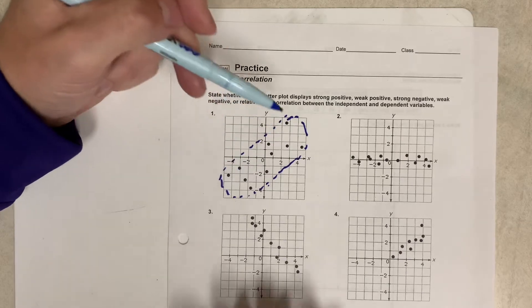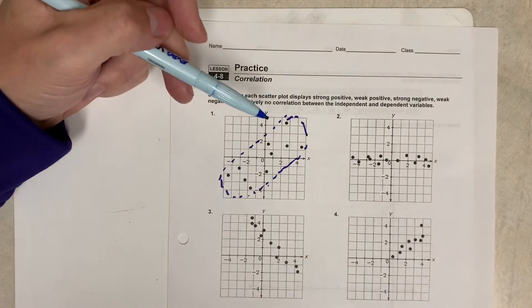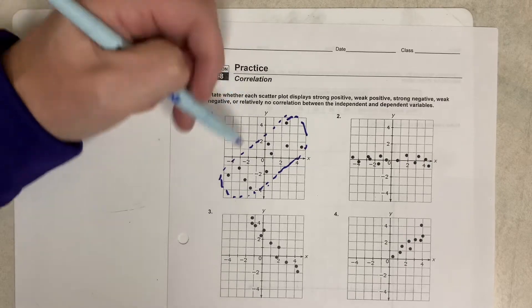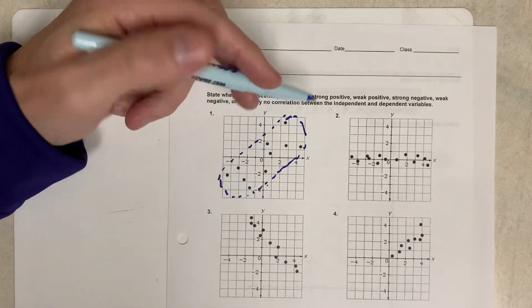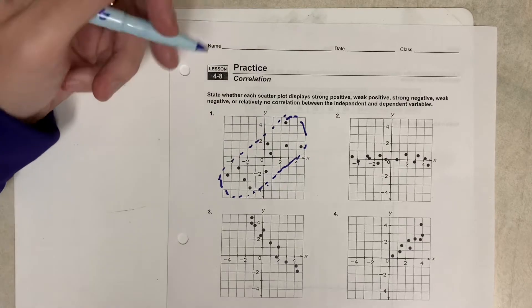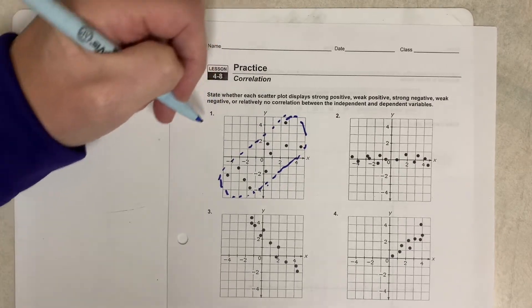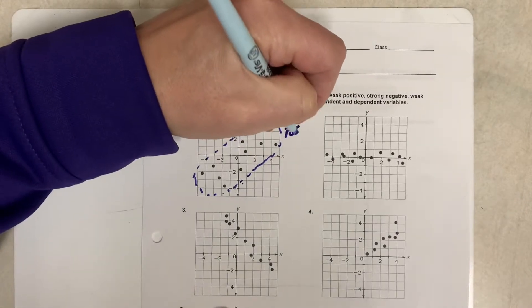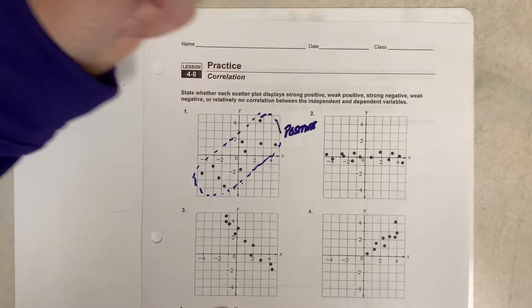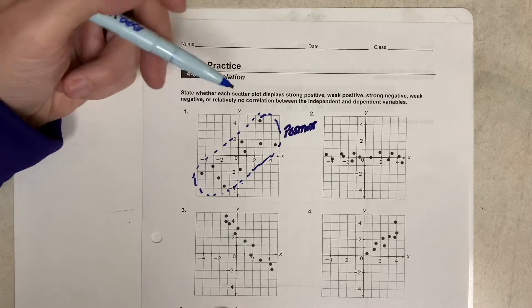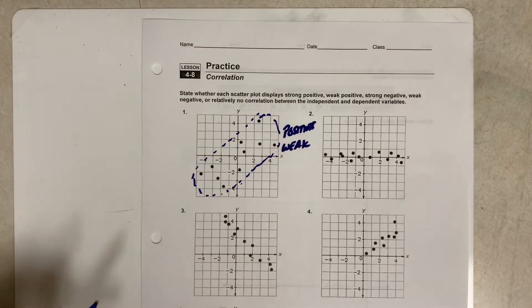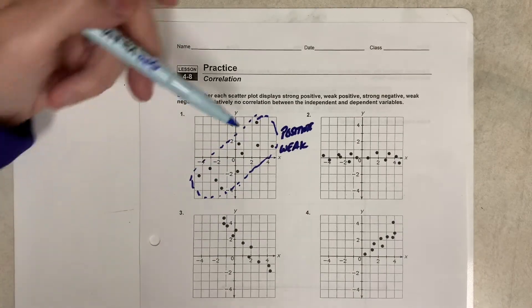It does look like as the x values get bigger, the y values of the ordered pairs are more than likely getting bigger as well. It's not very close though because the dots are spread out, and so we would say that this would be positive correlation. So I'm going to write the word positive here, and it's weak because the dots are kind of spread out, but it does look like it has this upward kind of trend to it.